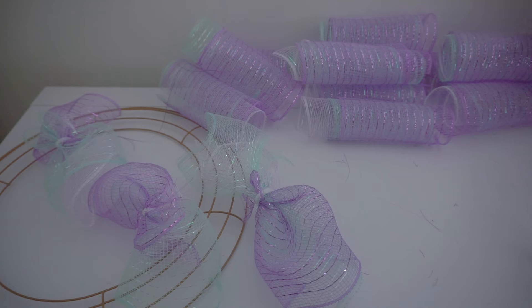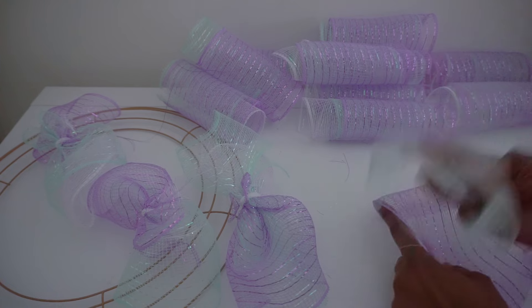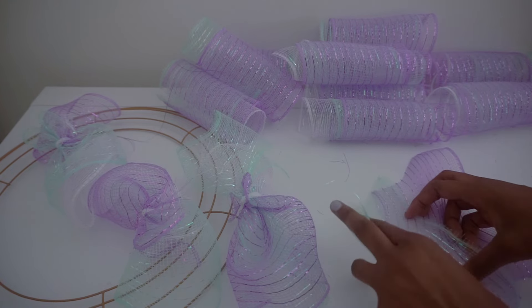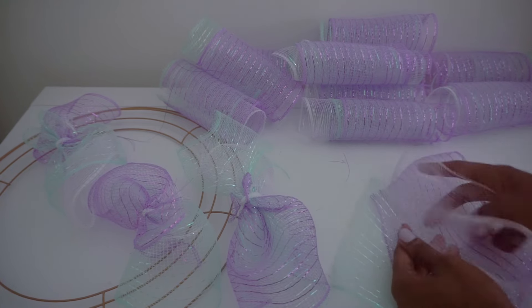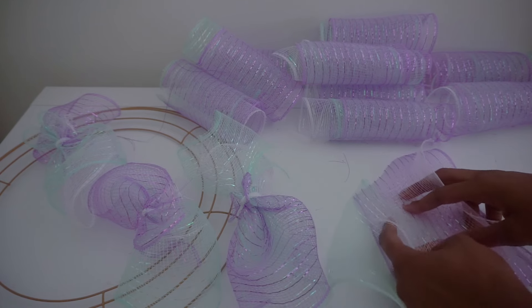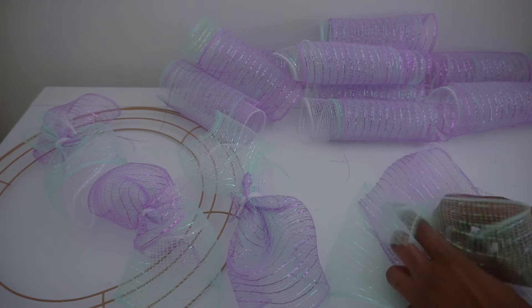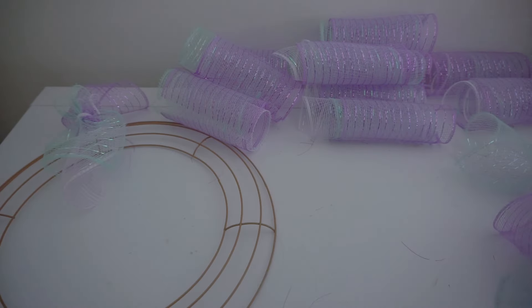Once you get all the bundles in place it'll be a little bit easier to maneuver. I'm going with four bundles in each of my six sections. Sometimes I go with three bundles in each section which makes a pretty decent sized wreath, but this time I'm just going to go with a little bit more.